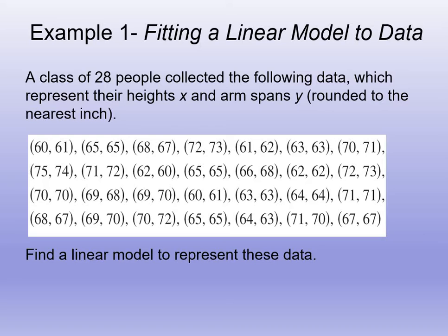Next, you're going to hit the stat button. You're going to go over to calculate, and then there's number four, it says linear regression. You're going to hit enter. Now, you're going to have to tell it what are you doing the linear regression of. So you're going to hit second, one, which is L1. And then comma, which is above the seven. And then second and two, which is L2.